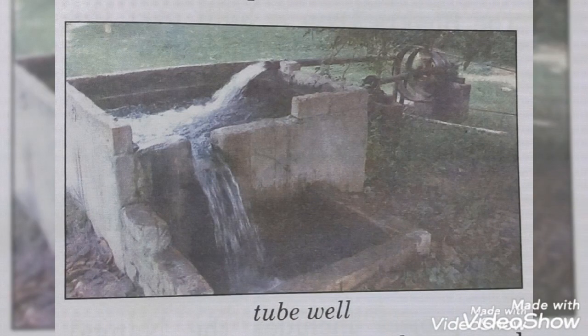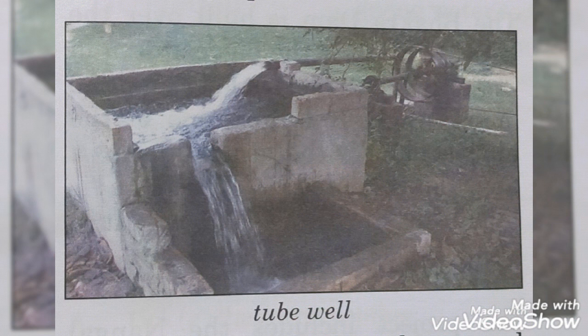Point number 5: Sometimes the underground water, or the water table, is very deep and we cannot reach it by digging wells. In such cases, deep bores are dug using machines, and tubes are sunk in these bores. Water is brought up using electric pumps called tube wells. These are widely used for irrigation in Punjab, Haryana, Uttar Pradesh, and Gujarat.